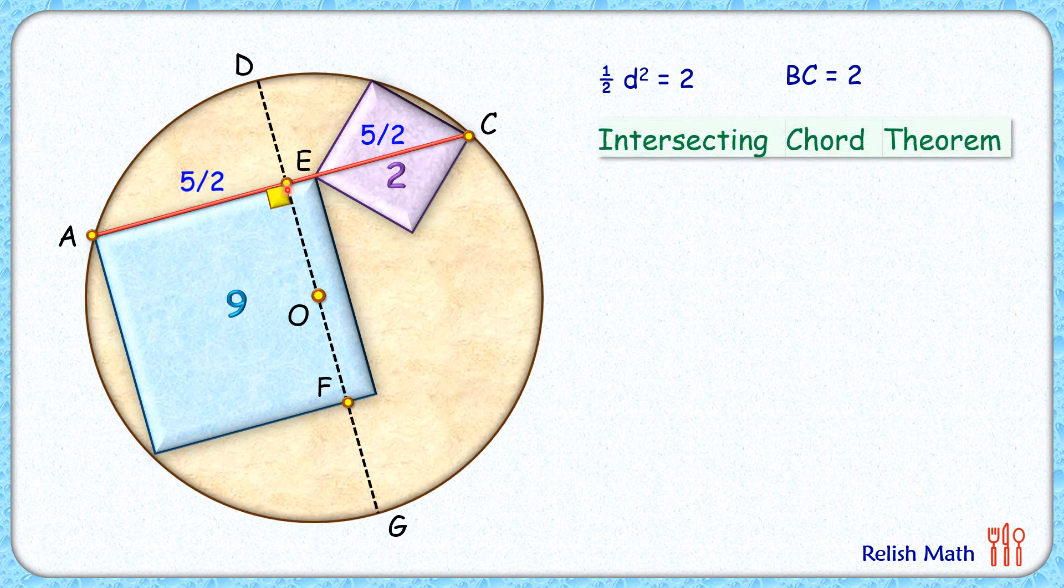So applying intersecting chord theorem, we'll get AE times EC is DE times EG. Putting the values here, AE and EC both are 5 by 2. DE, let's assume DE length is x centimeter. EF will be side of square or 3 centimeter.